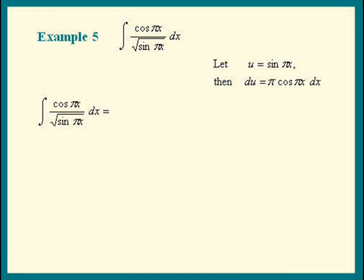Before we substitute the u's in, I'm going to rewrite the given integral. Bring the square root sine of πx up and write it as a negative 1 half power. This is what we have. Now let's substitute the u's in. We get sine of πx is u. We have u to the negative 1 half power. And cosine of πx dx is 1 over π times du. So let's put the 1 over π—that's a constant outside the integral.